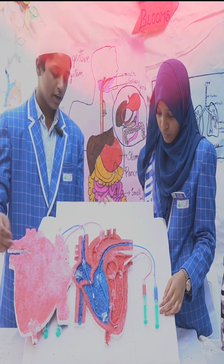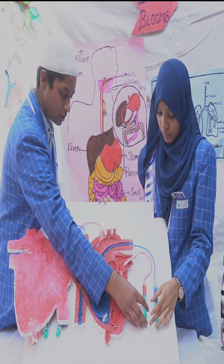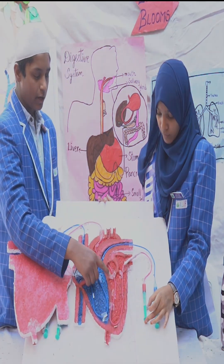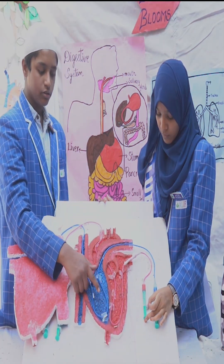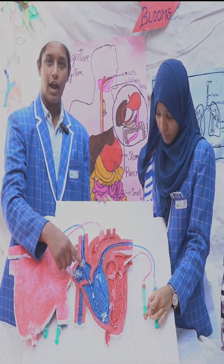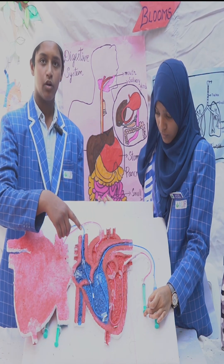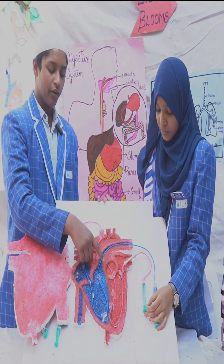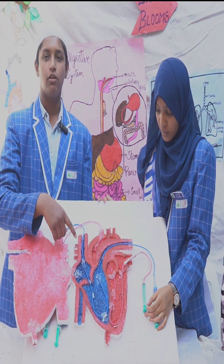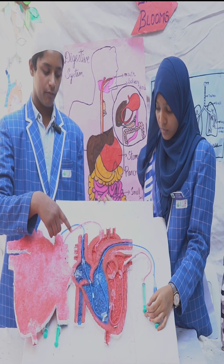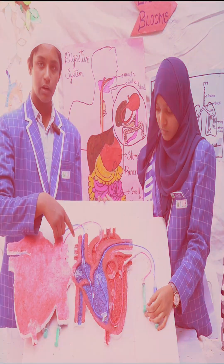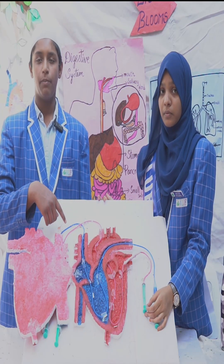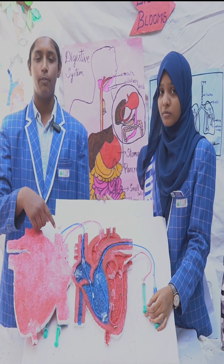The oxygenated blood comes from the lungs to the pulmonary vein. From the pulmonary vein, it goes to the left ventricle. Due to pressure, the bicuspid valve is opened, and from there it goes to the left atrium. From the left atrium, it goes to the aorta, which supplies blood to all the body.